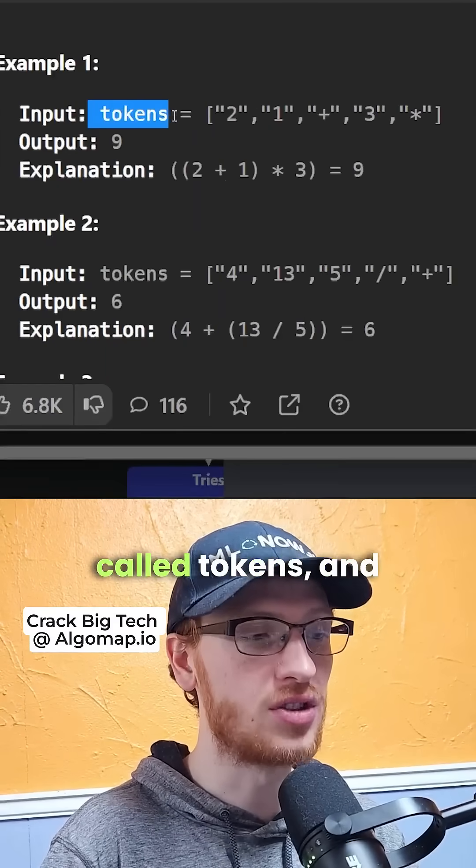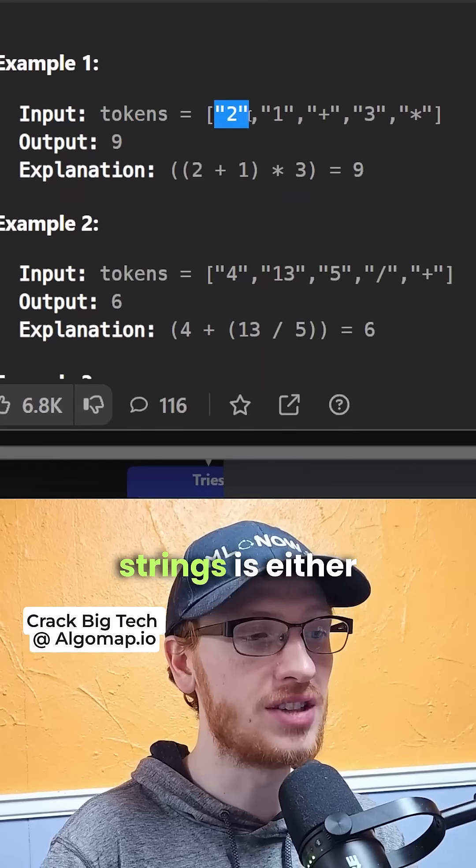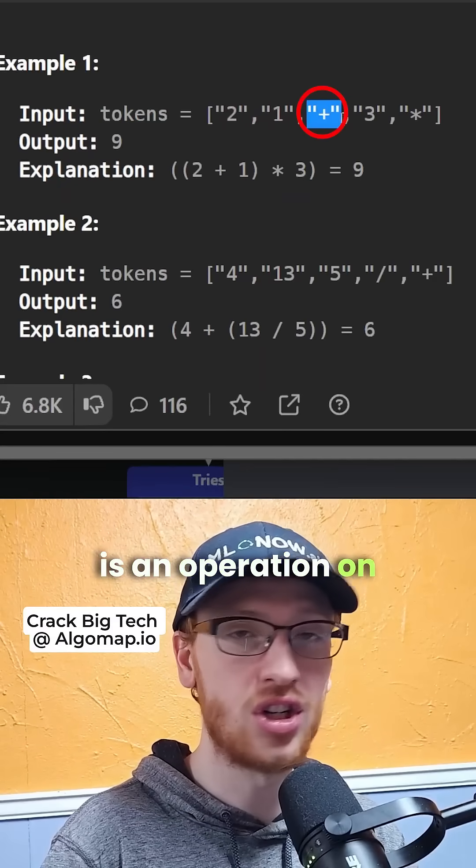In this question, we're given an array of strings called tokens, and each of the strings is either an integer or it is an operation on these integers.